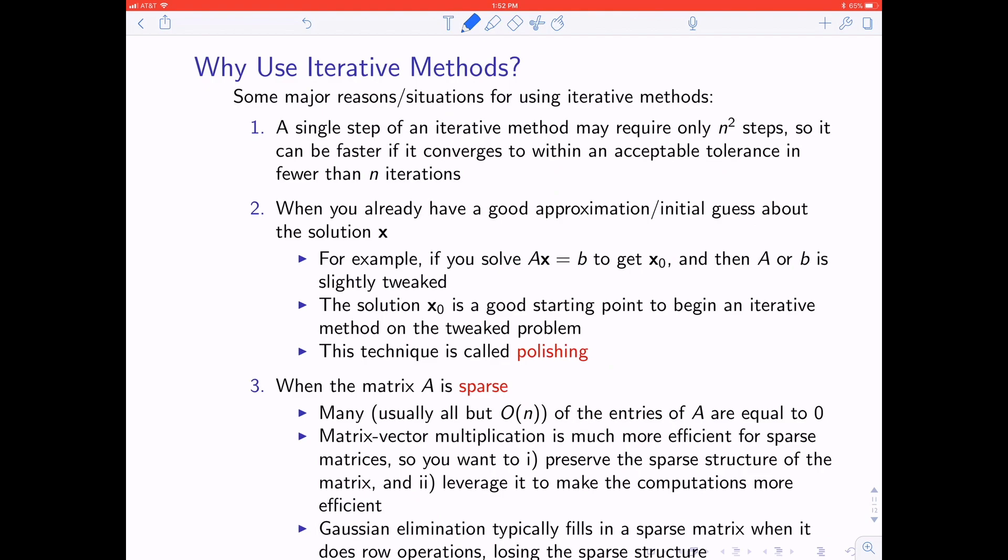Let's take a step back and just talk about why we would even be using iterative methods. As I mentioned, a single step of an iterative method typically requires n squared steps. So it can be faster if you get within an acceptable tolerance in fewer than n iterations. If it takes n iterations, then n times n squared is n cubed, and then you might as well just be doing some kind of LU decomposition or similar. It's also a great idea if you already have a good approximation or an initial guess about the solution x. There's no reason to start Gaussian eliminating from scratch if you already have a sense of where x should be. If you have a guess, then you can just iterate on that guess. This is called polishing.